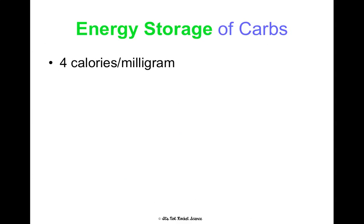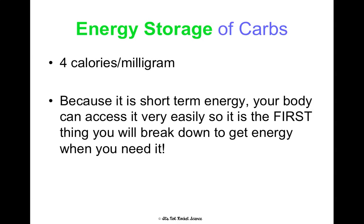In a carb, there are about four calories of energy in every milligram of carbohydrates. Because carbs are short-term energy, your body accesses them very easily. It's always going to be the first thing your body breaks down when it needs energy — it's going to go to your carbs first and get those four calories out of every milligram.